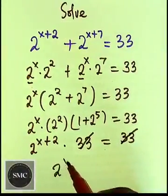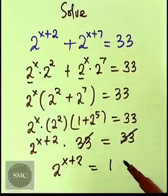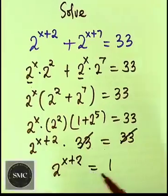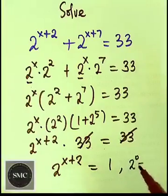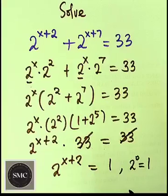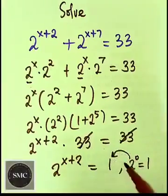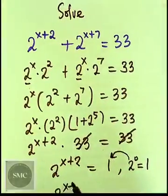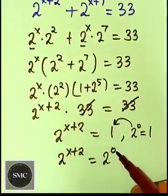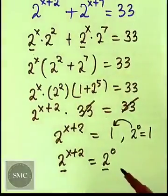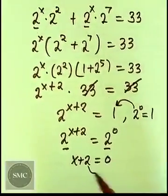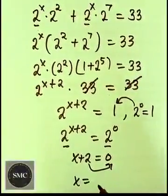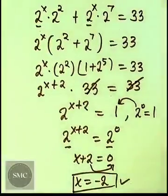We have 2 to power x plus 2 equals to 1. Since 2 to power 0 equals 1 — any exponent of 0 gives 1 — we replace 1 with 2 to power 0. So 2 to power x plus 2 equals 2 to power 0. Since the bases are the same, we equate the exponents: x plus 2 equals 0, therefore x equals minus 2.